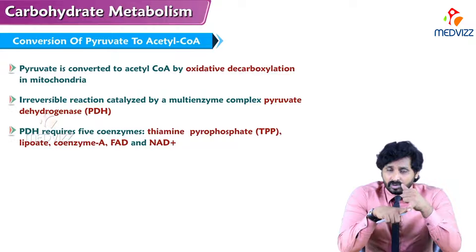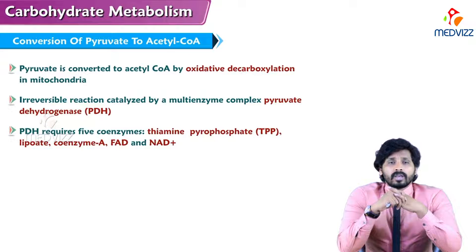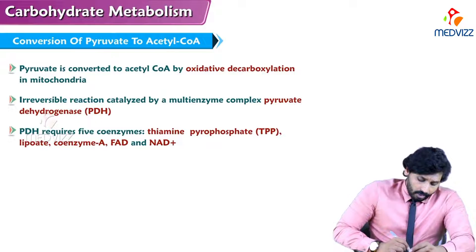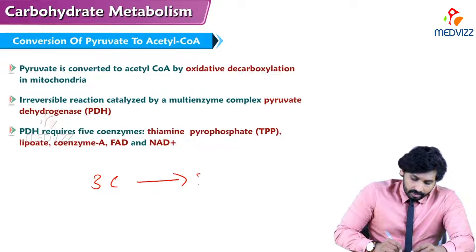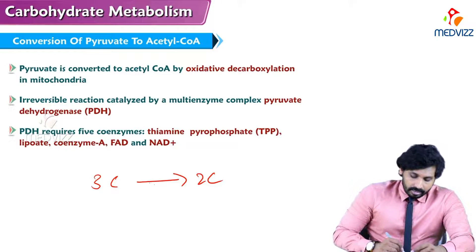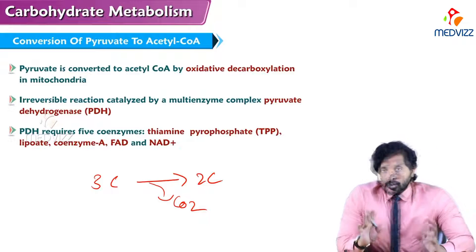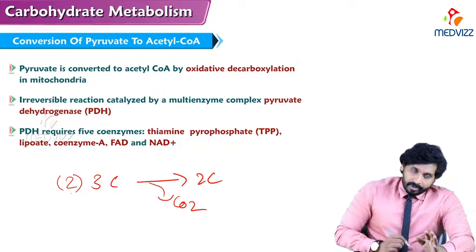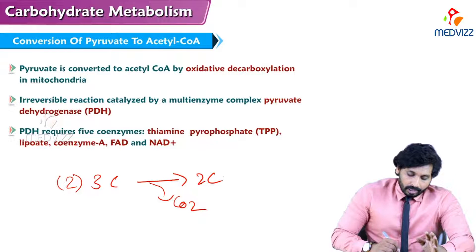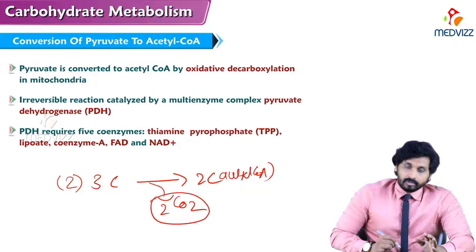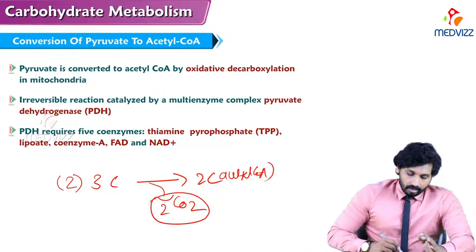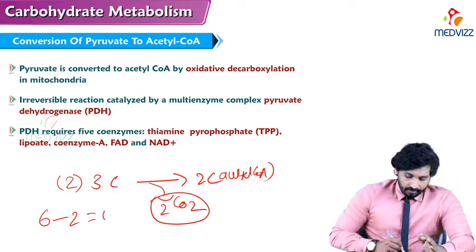Next is oxidative decarboxylation of pyruvate. Oxidative decarboxylation means both oxidation and decarboxylation take place. The three-carbon pyruvate is converted to the two-carbon acetyl-CoA, with removal of CO2. Two pyruvate molecules are produced at the end of glycolysis, so two molecules of pyruvate form two molecules of acetyl-CoA, removing two CO2 molecules.